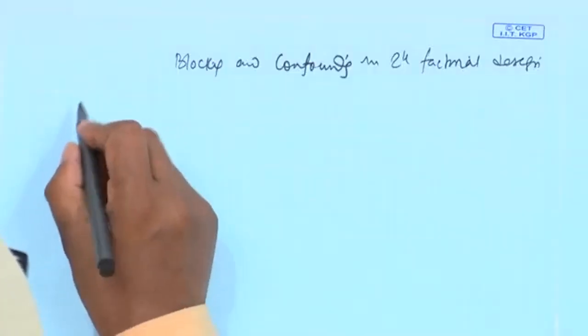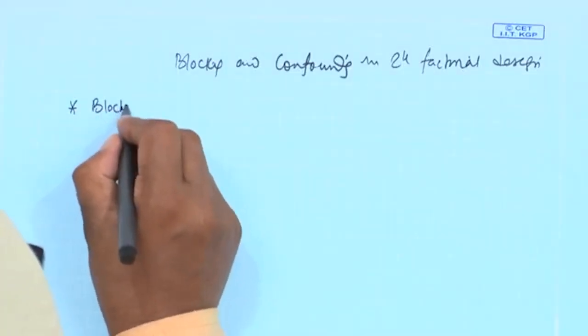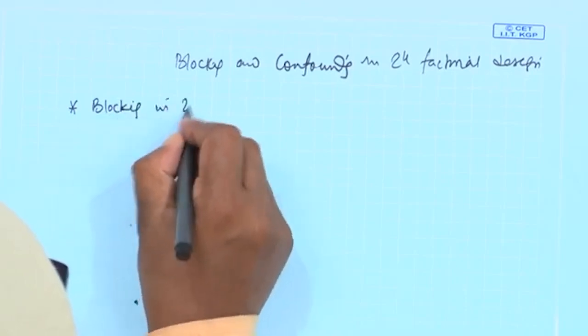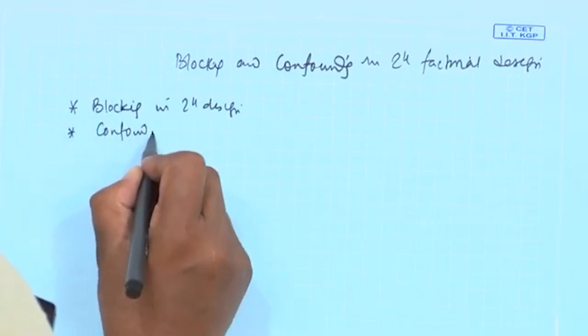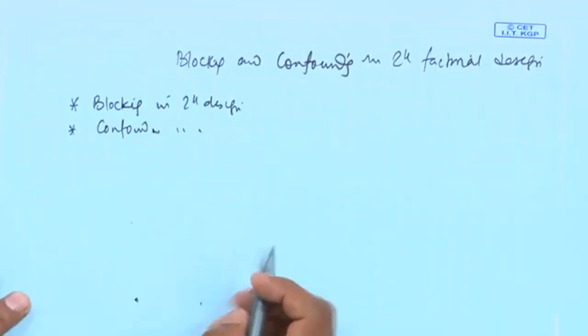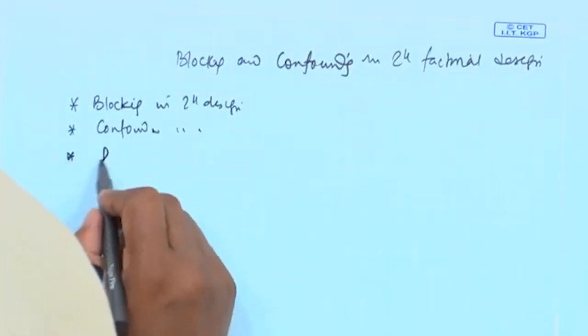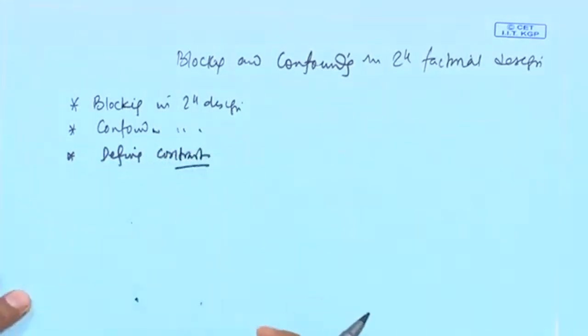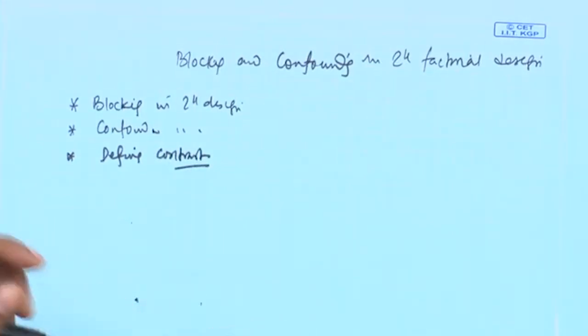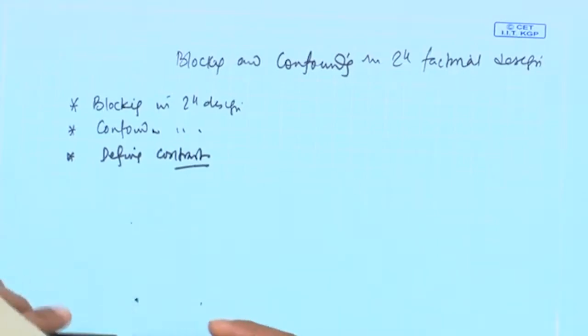Welcome. We will continue with blocking and confounding in 2^k factorial designs. In the last class, we discussed what blocking is in 2^k designs, what confounding is in 2^k designs, and we also discussed the defining contrast, which helps in assigning different treatment combinations to different blocks.